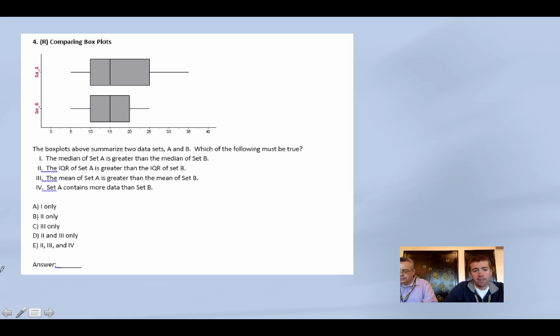Now we're going to compare some box plots. Again, this is just review from last unit. This stuff doesn't go away. So they summarized two data sets. Which one of the following must be true? Does the median of set A is greater than the median of set B? These look exactly the same. Cross that one off. The IQR of set A is greater than the IQR of set B. Well yeah, this box is much bigger than this box. So I'm going to say two. Q3 minus Q1 is the width of the box. So two works.